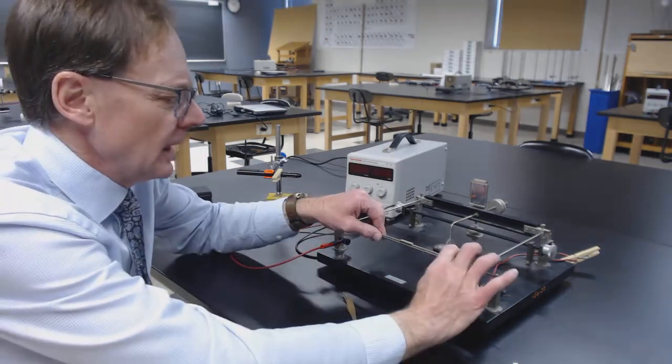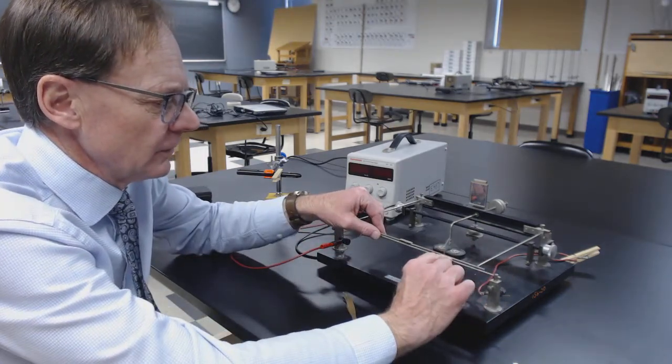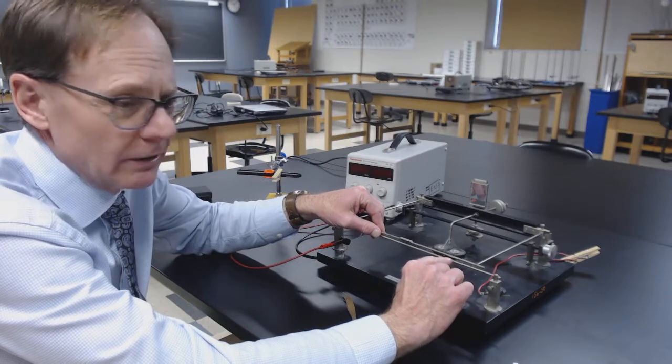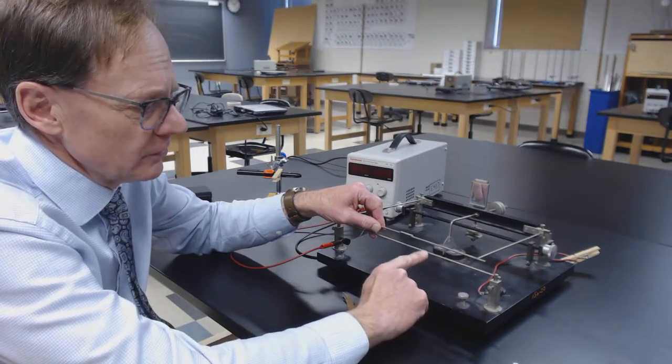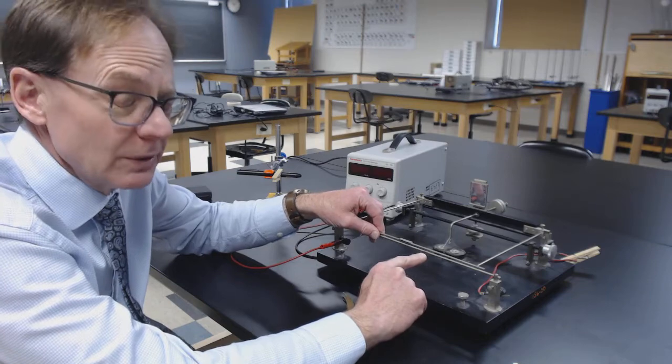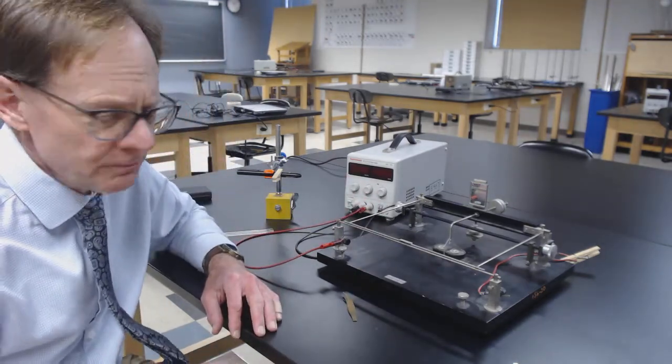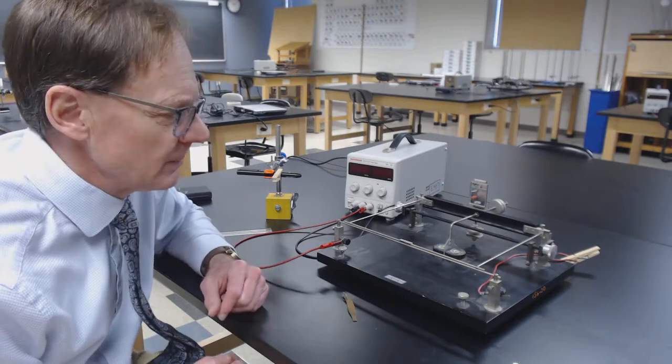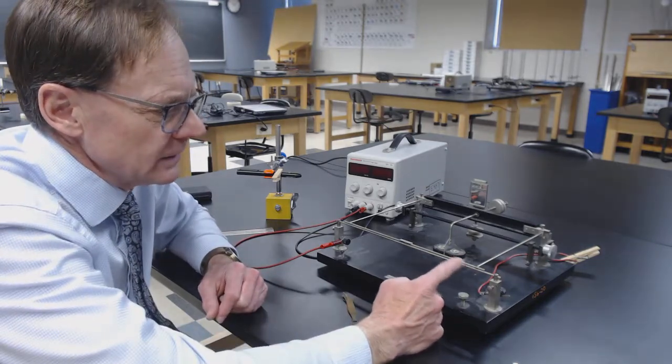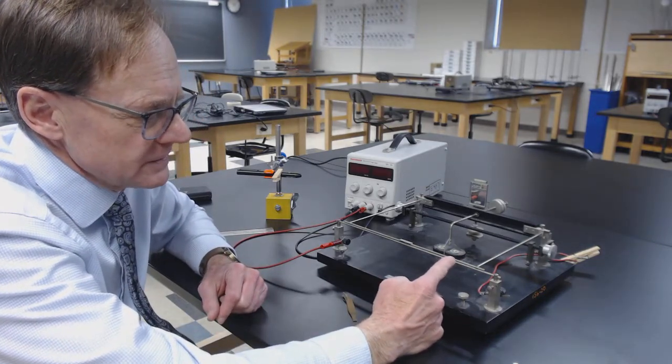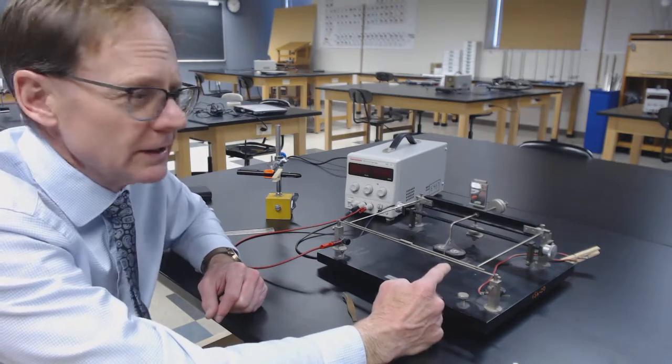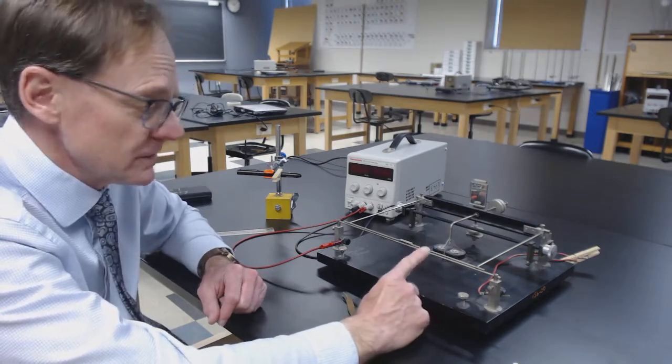We have the same current, the same magnitude of current flowing in the top wires and the bottom wire here. What would we expect the force between those to be? How would we expect that to depend on current? You're going to do that derivation, then discuss whether you want the current in the top wire to be in the same direction as the current in the bottom wire or in the opposite direction if you want a repulsive force.